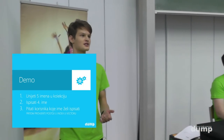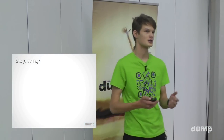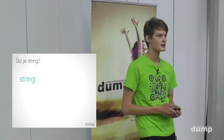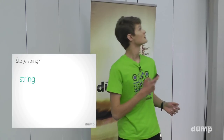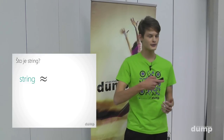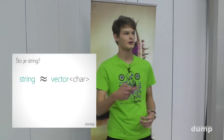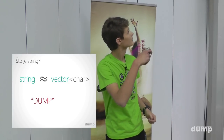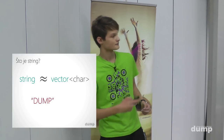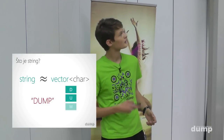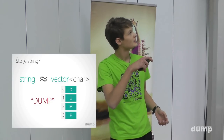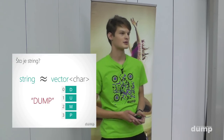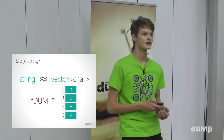Do sada smo jako često koristili stringove — koristili smo ih za spremanje riječi, odnosno nizova znakova. Sada kad znamo što je vektor, možemo analizirati što je string u biti. String je nešto poput vektora charova. Char je tip varijable koji sprema samo jedan znak. Primjerice, riječ 'dump' sastoji se od četiri znaka: d, u, m, p — svaki ima svoj indeks: d je na indeksu 0, u na 1, m na 2, p na 3.